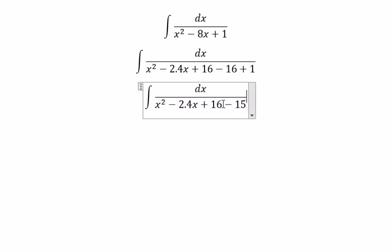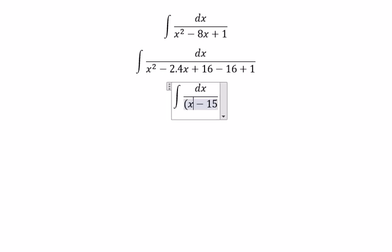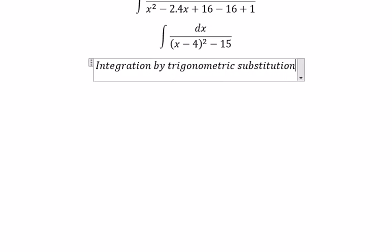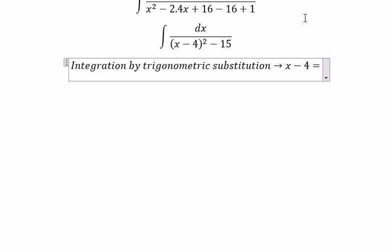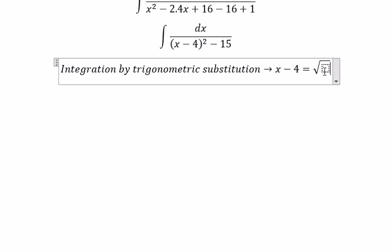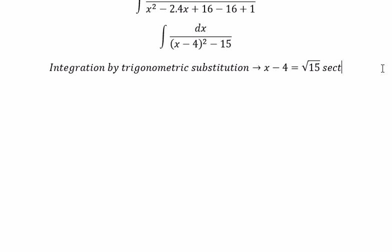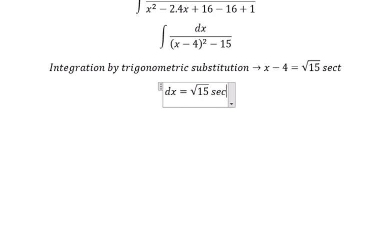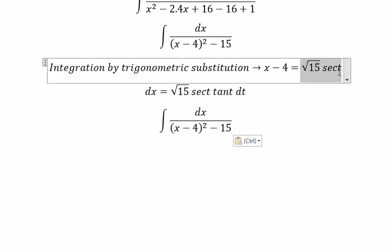We can write this as (x - 4)² and now we can use integration by trigonometric substitution. So we set x - 4 equal to the square root of 15 secant t. This gives us dx equals the square root of 15 secant t tangent t dt. We substitute this into our integral.